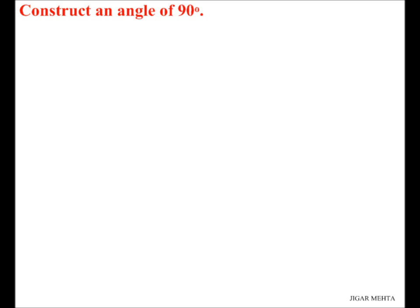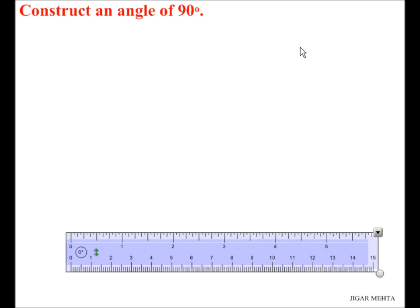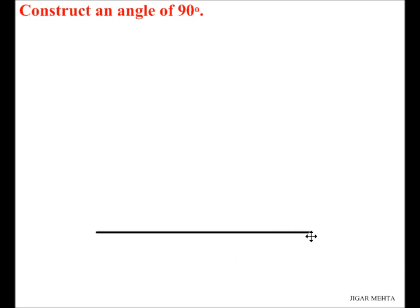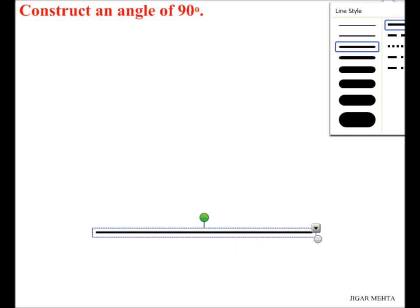So let us first draw an angle of 180 degrees, which is very easy. What we have to do is just draw a straight line, and we know that an angle on a straight line is 180 degrees. So let me put the arrowheads here, and I've got a straight line.